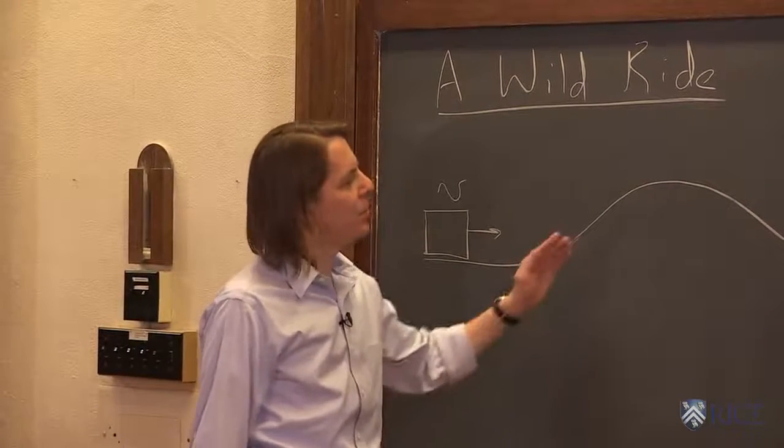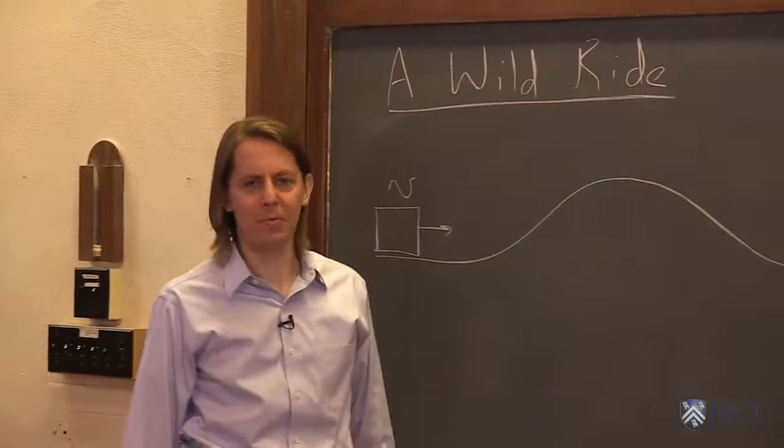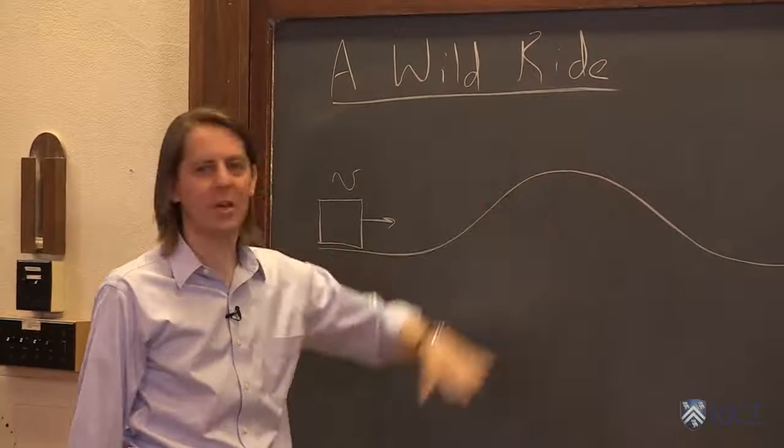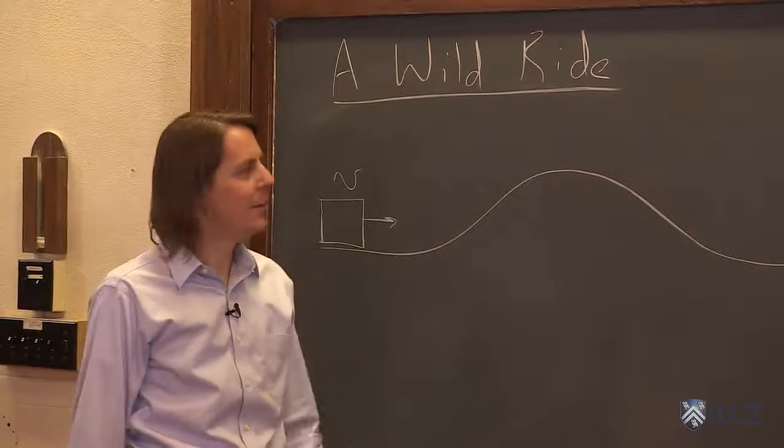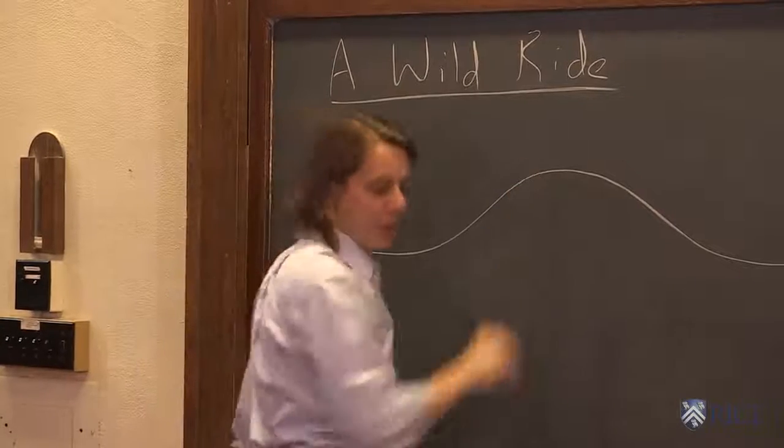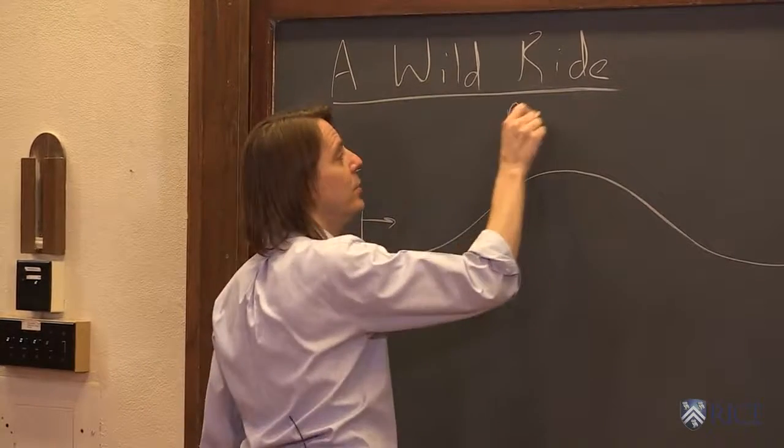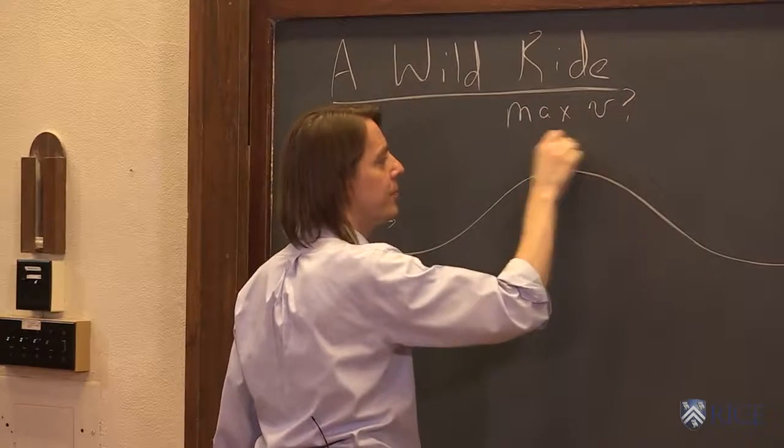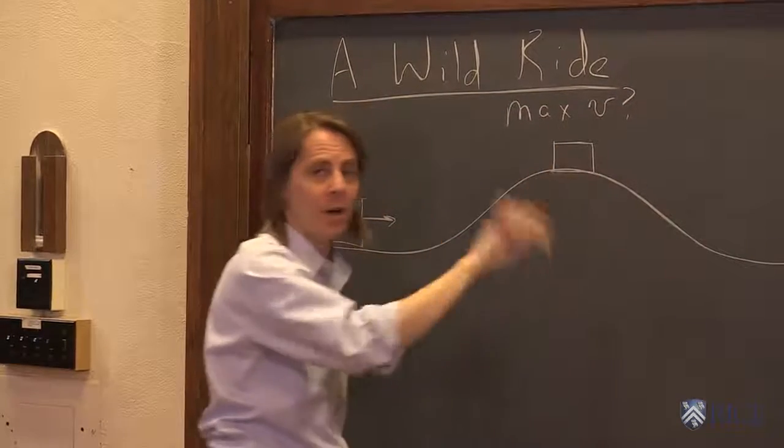By minimum and maximum, I mean when you go over a hill, let's apply our intuition for a minute. When you go over a hill, if you go real slow, you stay on the hill, everything's fine. If you go fast enough, you'll actually jump, you'll come off the hill. So we want to know what is the maximum speed we can go when we're in this position and not fly off the hill.